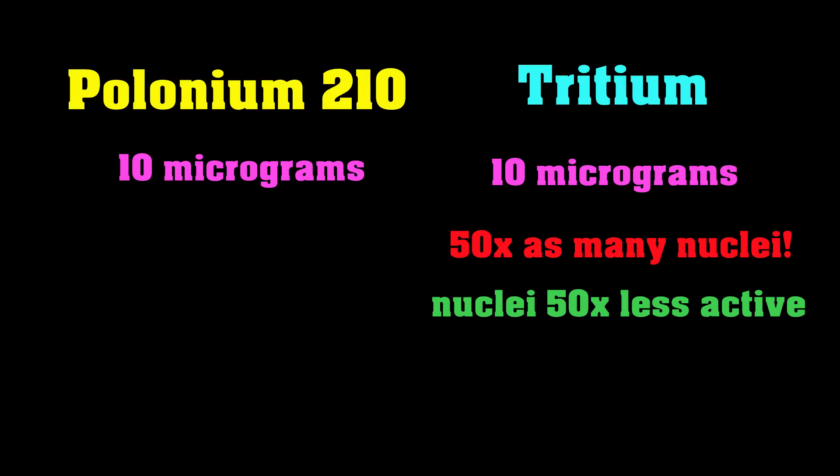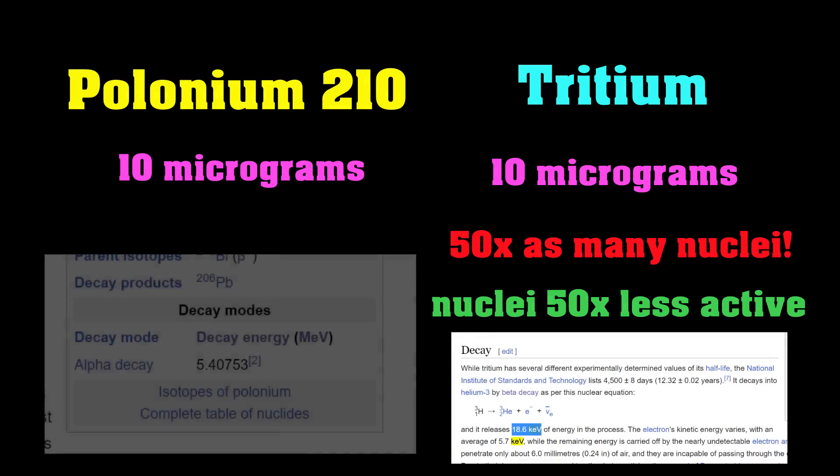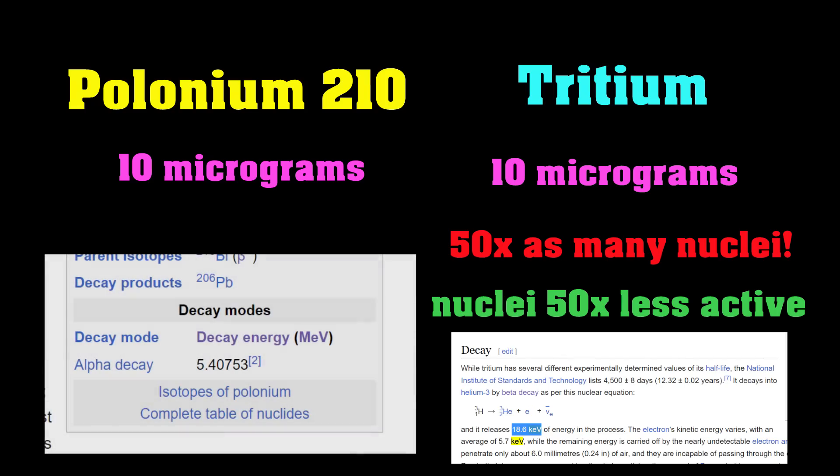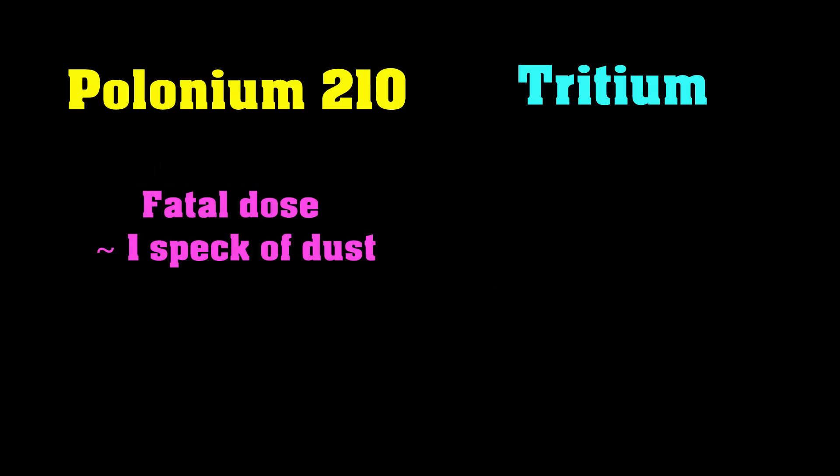So, equal masses of tritium and polonium will be giving off about the same number of radioactive particles per second. But the radioactive particles coming off the tritium are about 100 times weaker than those coming off the polonium. So, the fatal dose of polonium was about a speck of dust, about 10 micrograms. You would expect that the tritium fatal dose will be 100 times greater. You know, 100 specks of dust. Yeah, sometimes a factor of 100 really doesn't make that much difference.